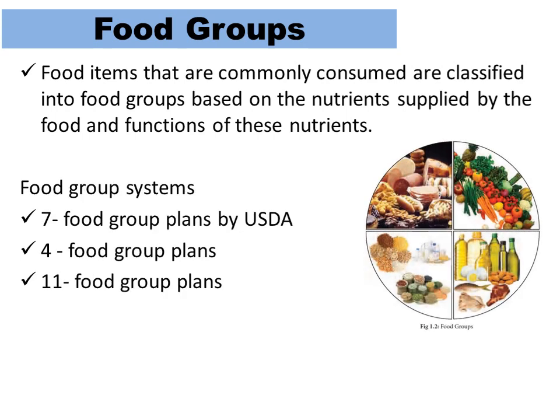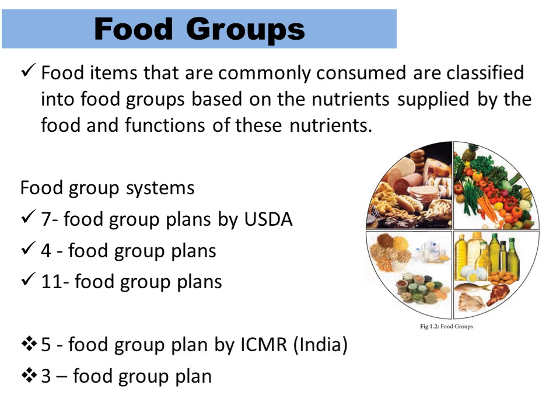Some food group plans given by USDA include a 7 food group plan, followed by 4 food group and 11 food group plans. In 2010–11, ICMR gave 5 food group and 3 food group systems for the Indian population. We must be aware of the latest updated guidelines, as we cannot follow the same age-old guidelines.